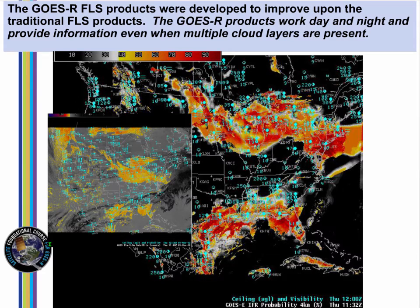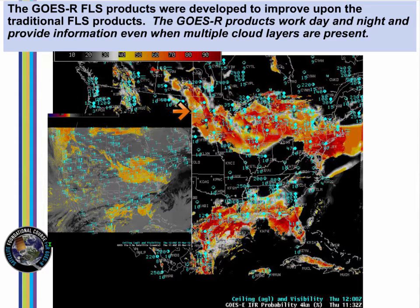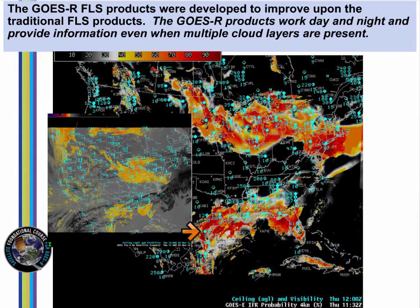Here is the GOES-R IFR probability field for the same time as shown earlier. The BTD field is inset. Note how mid-level stratus is correctly screened out in the IFR probability field over Pittsburgh. IFR probability includes values over Bismarck as well, and upstate New York, where reduced ceilings and visibilities are occurring under multiple cloud layers. There are no strong signals there in the brightness temperature difference field. IFR probabilities are very high correctly in and around Corpus Christi.